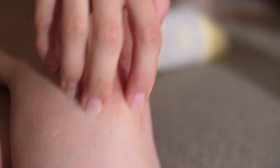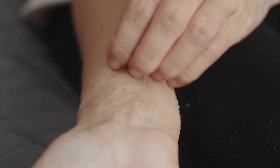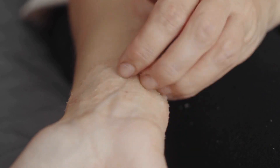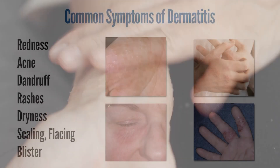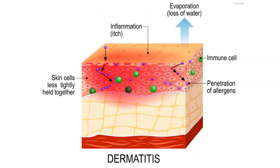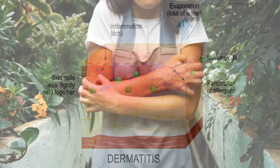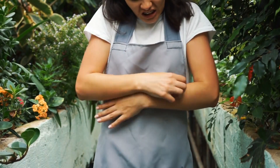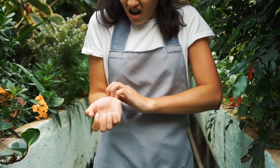Dermatitis is a general term used to refer to inflammation of the skin. It can refer to things like rashes, acne, and even dandruff. Skin redness, dryness, and itchiness are the most common symptoms of dermatitis, but scaling, flaking, and blisters can also occur.